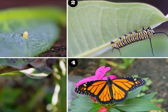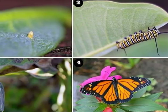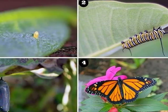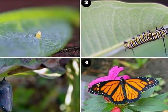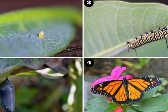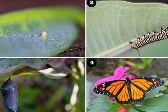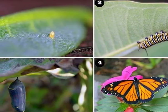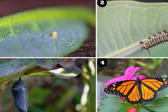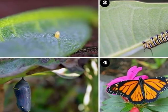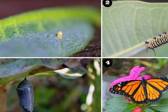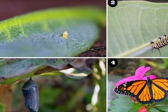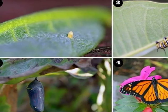Here we can see the four stages of the life cycle of a butterfly. Number one, the egg. Number two, the caterpillar or the larva. Number three, the chrysalis or the pupae. Number four, the butterfly.